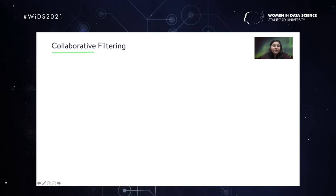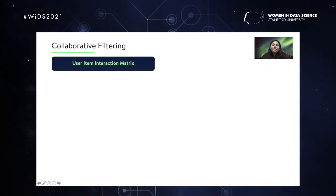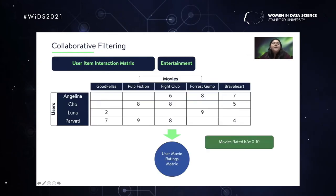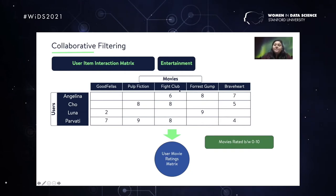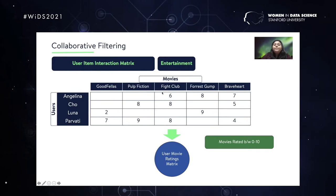I'm going to use an example from the entertainment industry to explain the user-item interaction matrix. We have a matrix with users — Angelina, Cho, Luna, and Parvati — where each row denotes a user. We also have movies — Goodfellas, Pulp Fiction, Fight Club, Forrest Gump, and Braveheart — where each column represents a movie. Each cell represents the rating given by the i-th user to the j-th movie. For example, Fight Club has a rating of 6 given by Angelina, and a rating of 8 given by Cho.